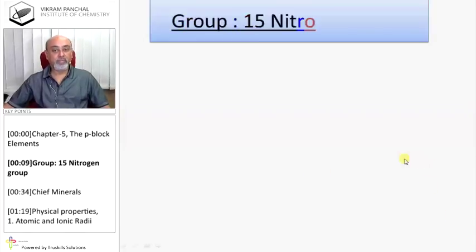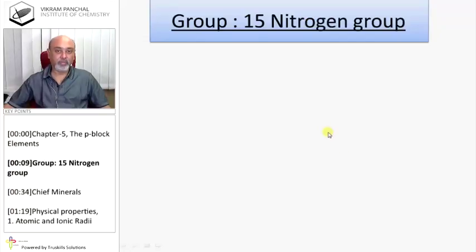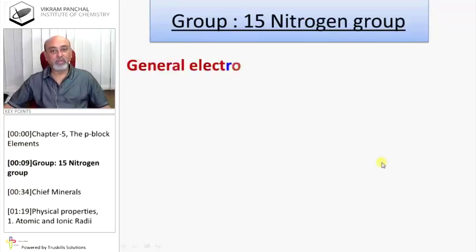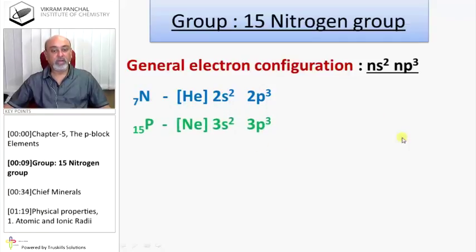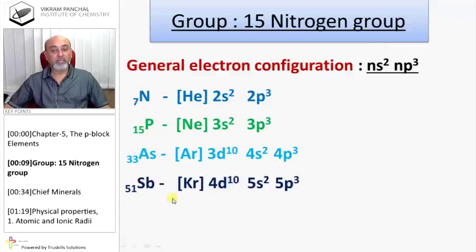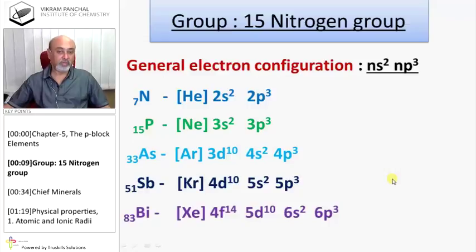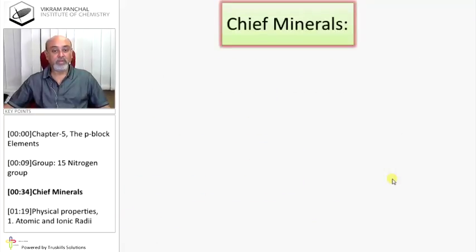Group 15, Nitrogen Group. The common configuration of nitrogen group is NS2NP3. Nitrogen 2S2 2P3, Phosphorus 3S2 3P3, Arsenic 4S2 4P3, Antimony 5S2 5P3, and Bismuth 6S2 6P3.